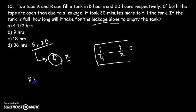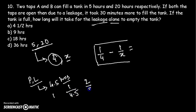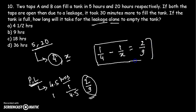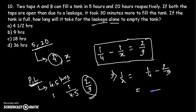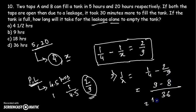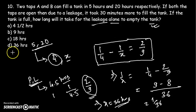So: 1/4 minus 1/X = 2/9, which gives 1/X = 1/4 minus 2/9 = 9/36 minus 8/36 = 1/36. Therefore X = 36 hours. The leakage takes 36 hours to drain the tank completely, which is Option D — the same answer as obtained by the first method.